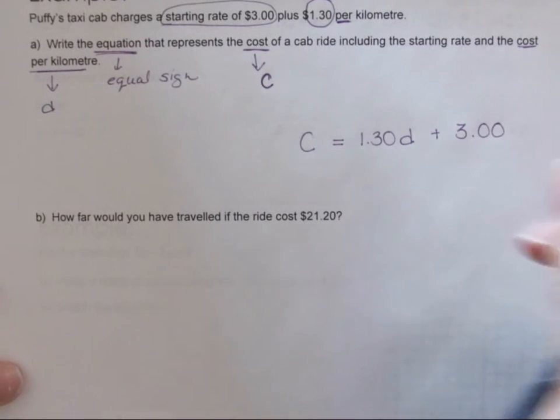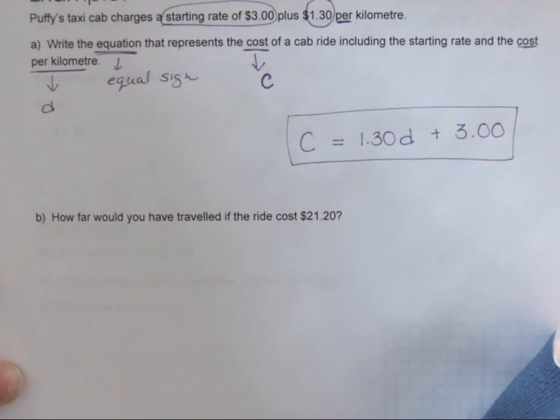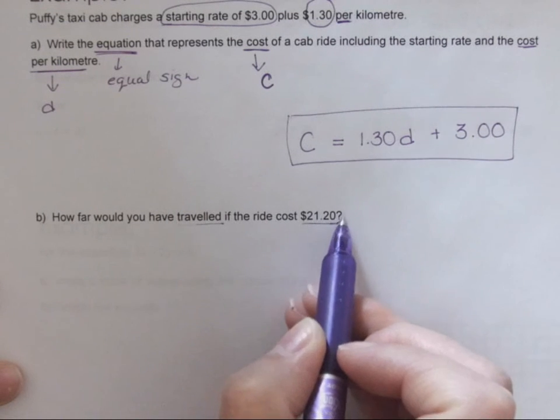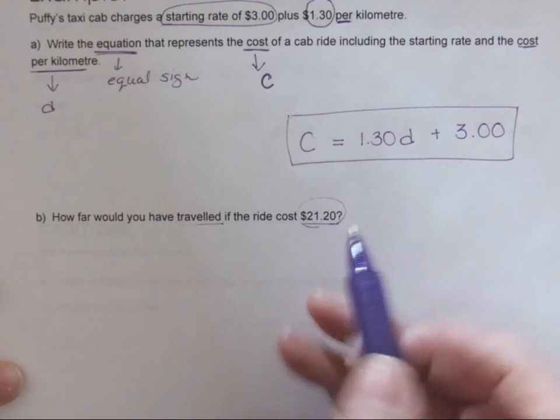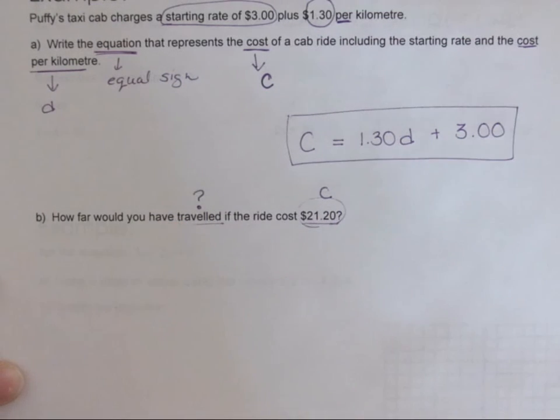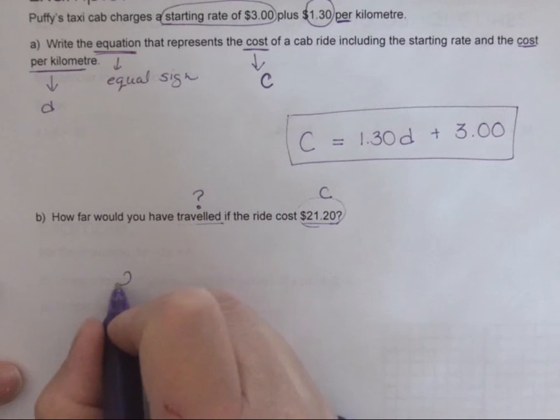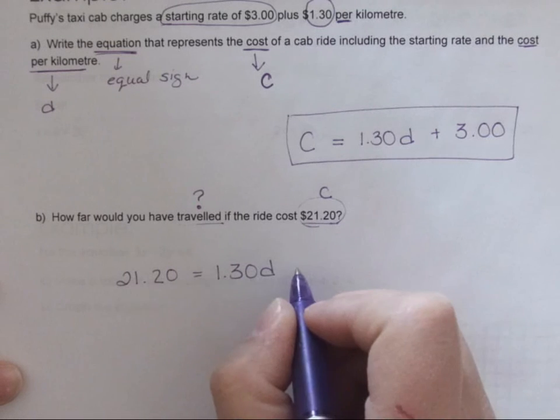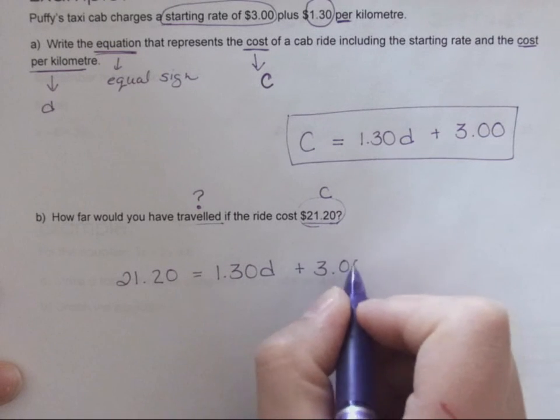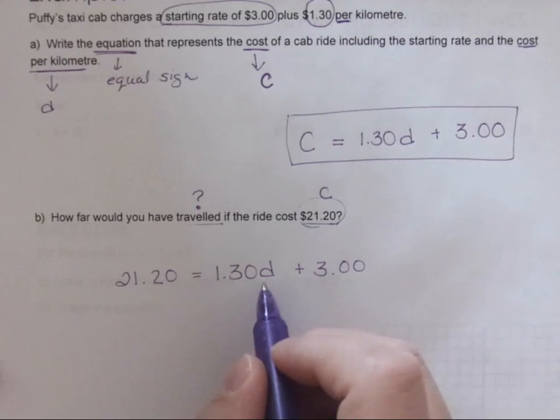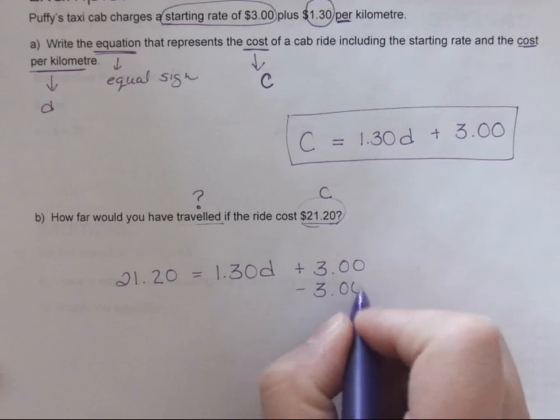All right, and now for part b it said how far would you have traveled if the cost was 21.20. So now we know c but we're trying to figure out our d value. Okay, so we're going to put in 21.20 equals a dollar thirty d plus three dollars. All right, so this is just two-step algebra. This is why we did equations before we did this unit, because we're just doing that same algebra. I want to get d by itself so I'm going to subtract three from both sides.